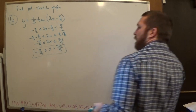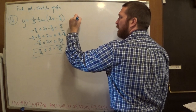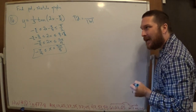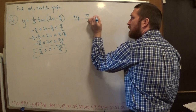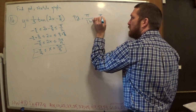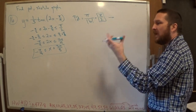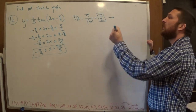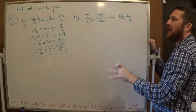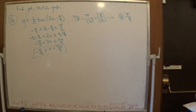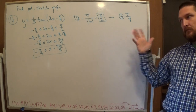Another way: the period is π over |b|, which here is π over 2. That's the period. Now I chop the period into four bits. Dividing by 4 gives π/8 — so I count by π/8. Starting at -π/8 and counting by π/8, I should end up at 3π/8 after four steps. So the asymptotes go at -π/8 and 3π/8.